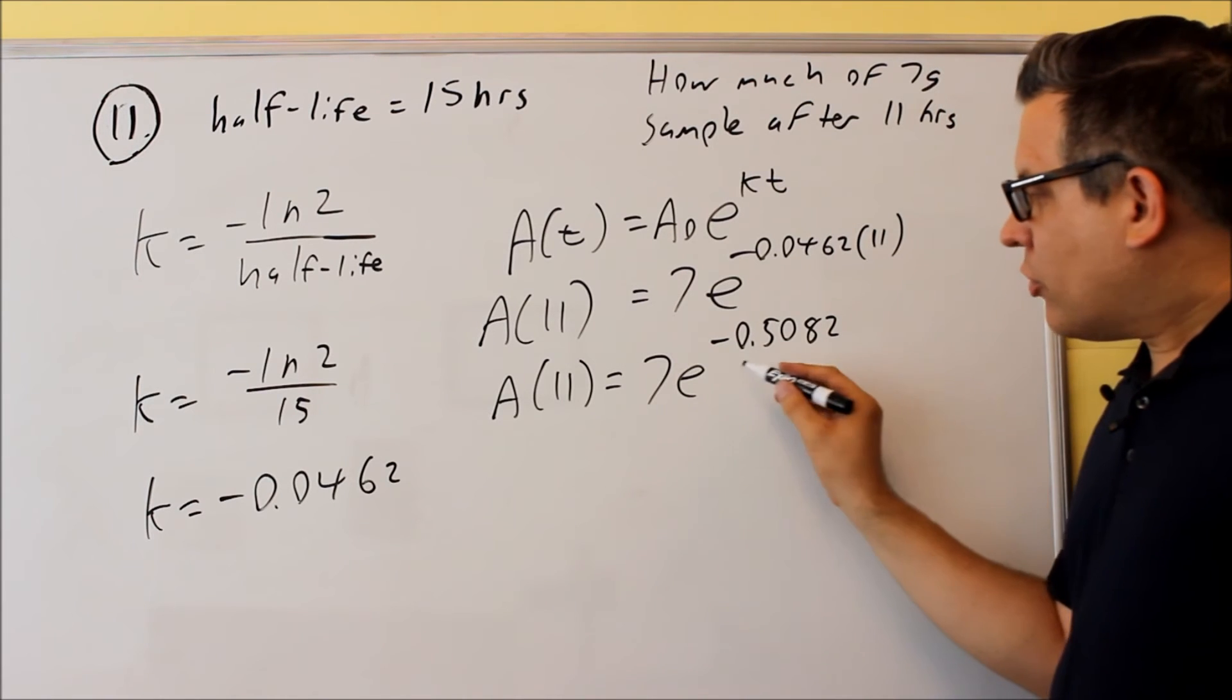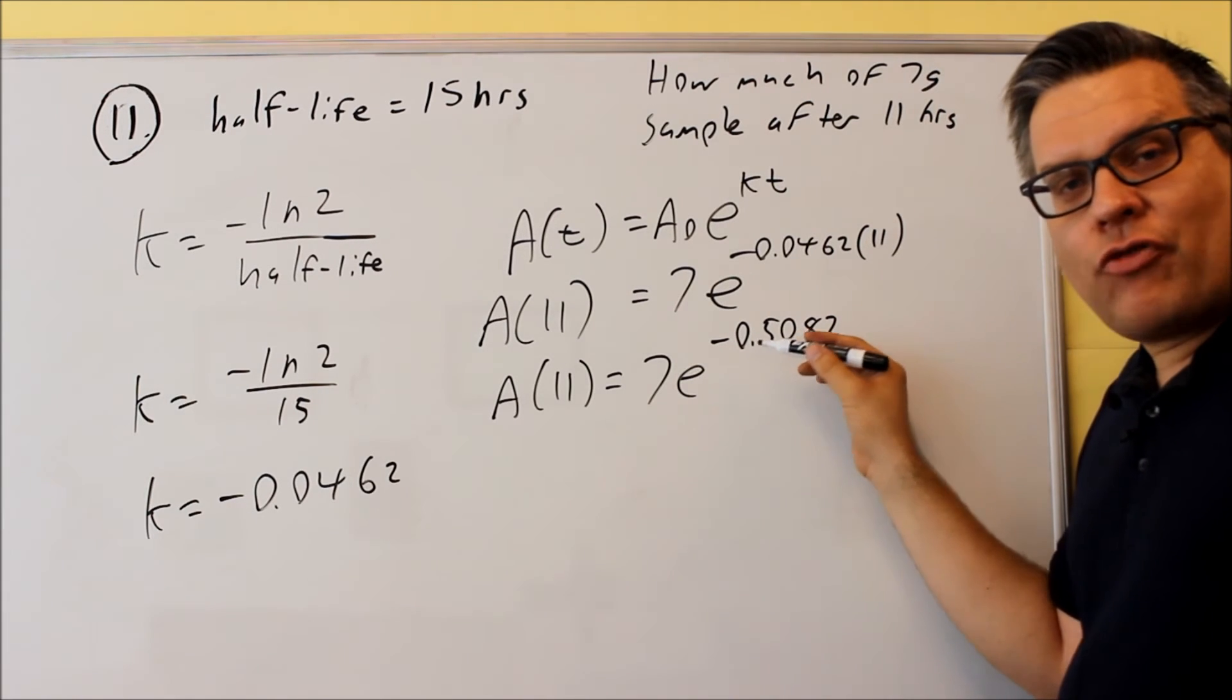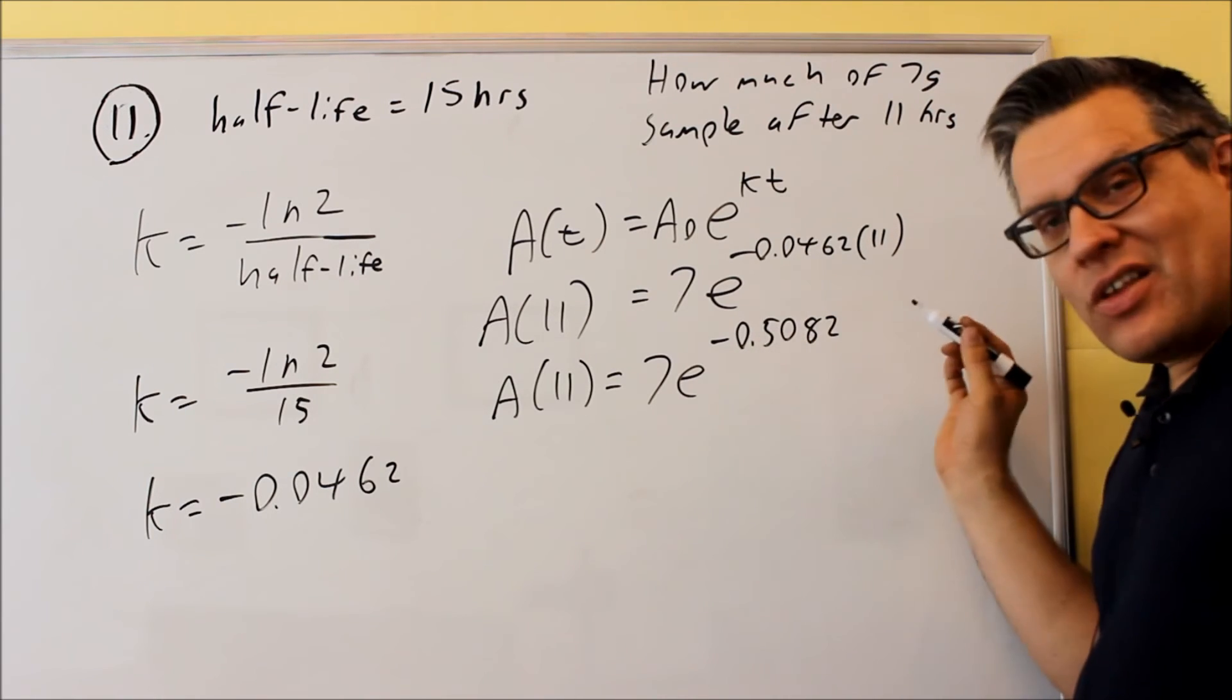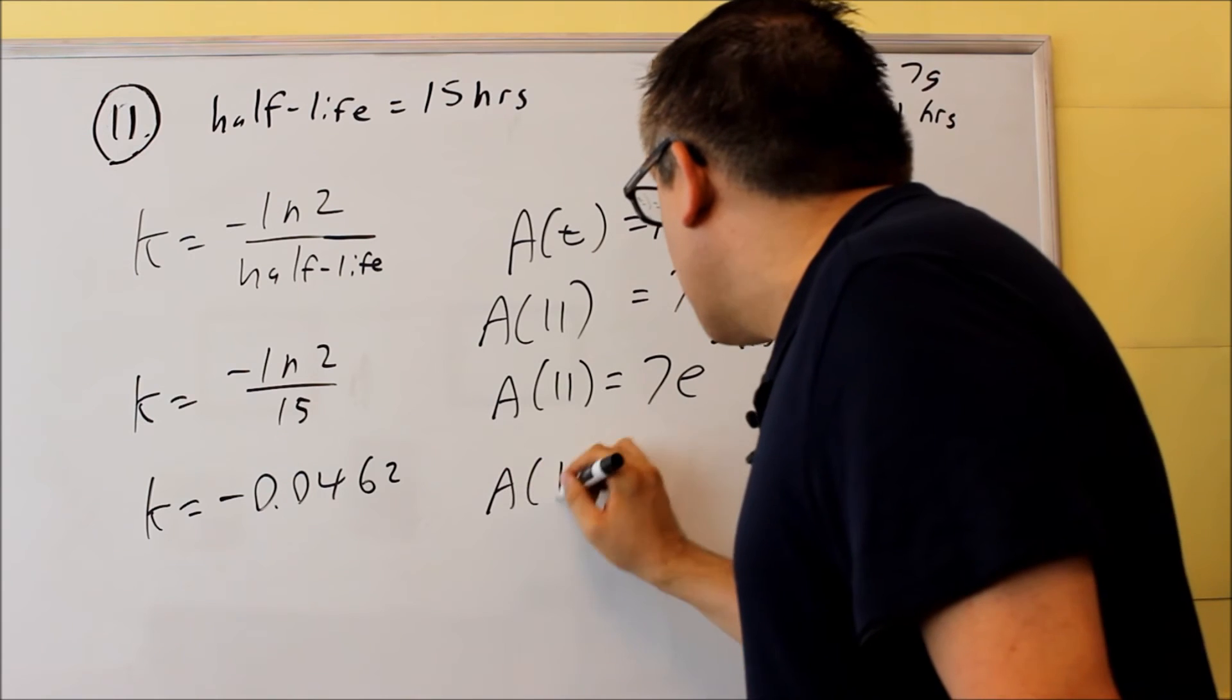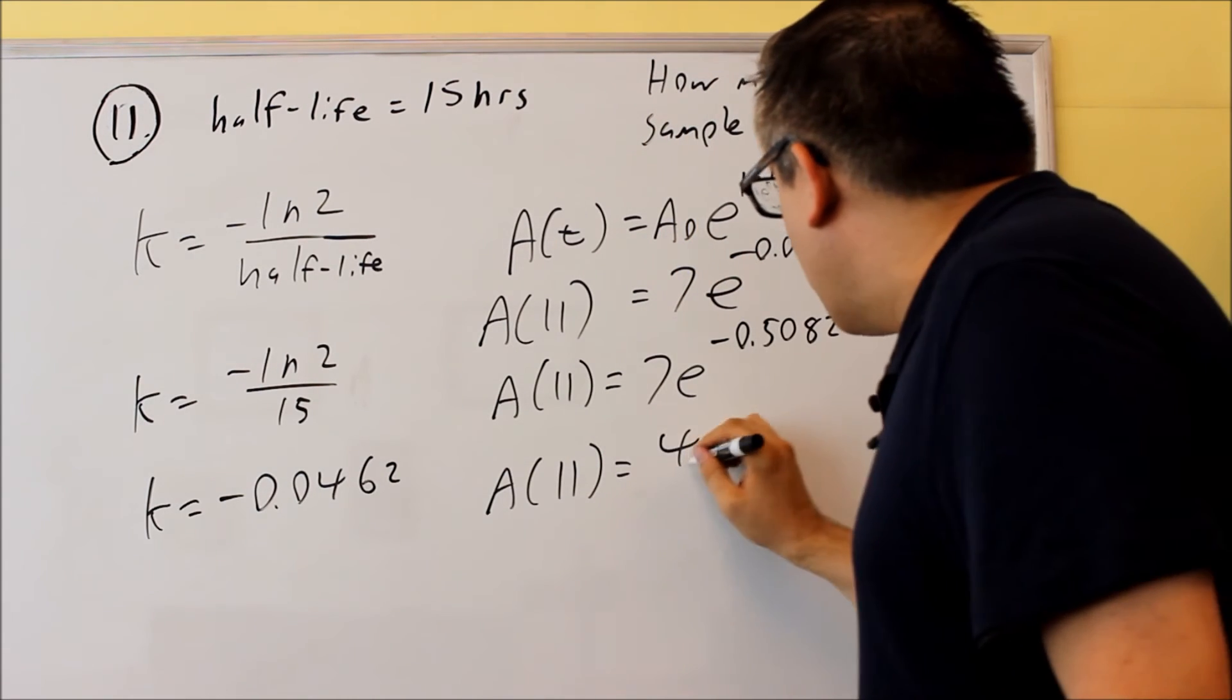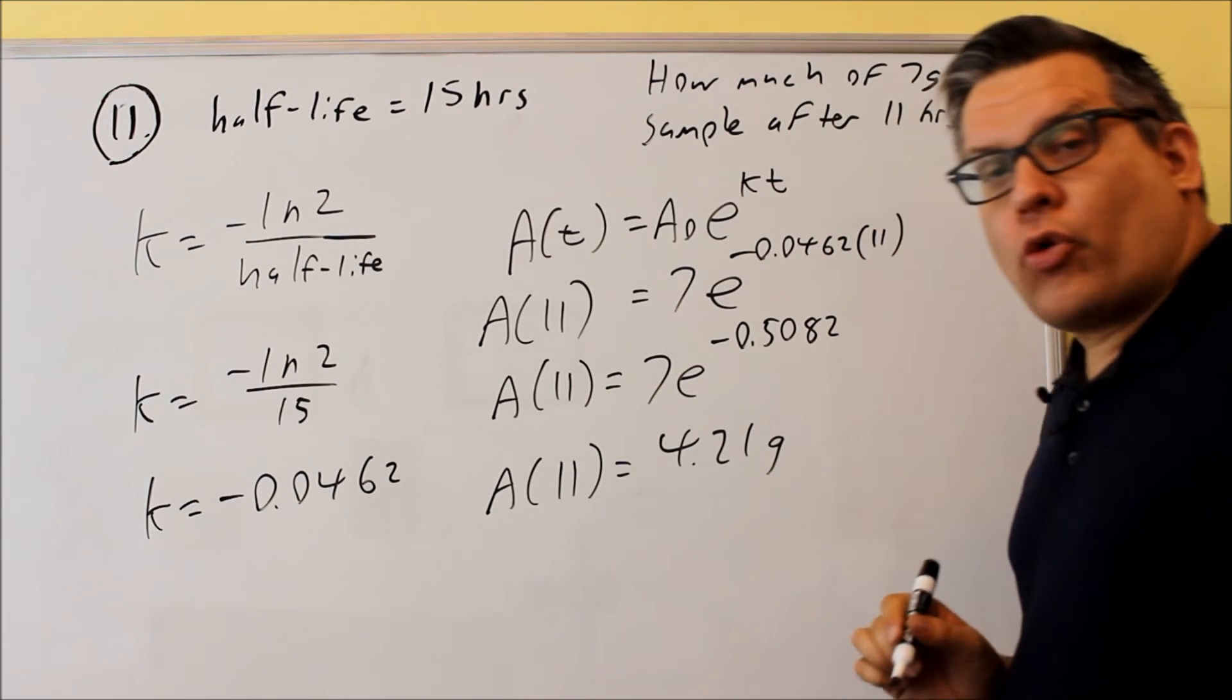The last thing you'll do is use the e-carat key, which you'll find above your natural log key on your calculator. Put e raised to this decimal, then multiply that by 7. The final answer is 4.21.